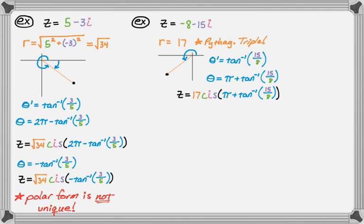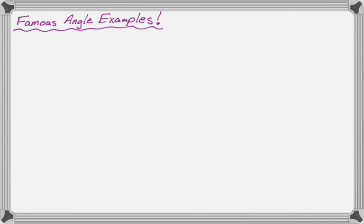So I do want to take a look at two more examples. And those involve famous angles, because these are very common. So for example, you might want to convert five root two minus five root two i. So I look at that and I think, root two and root two seems very familiar.